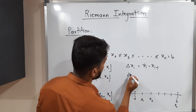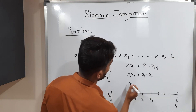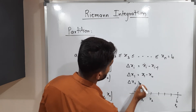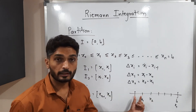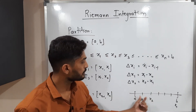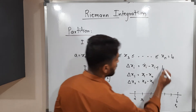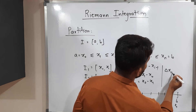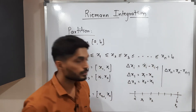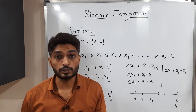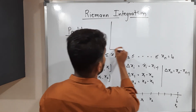Delta xi is nothing but xi minus x(i-1). So delta x1 = x1 − x0, and delta x2 = x2 − x1. Delta x1 means the length of the first sub-interval, delta x2 means the length of the second sub-interval, and so on. Similarly, delta xn = xn − x(n-1). In this way we find the length of each sub-interval. Let us discuss one example so you can easily understand.